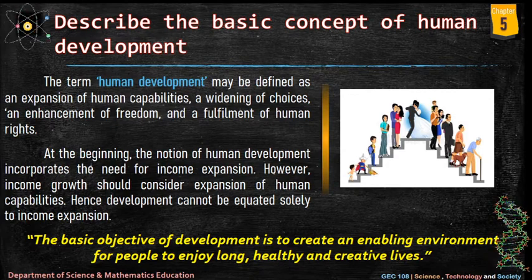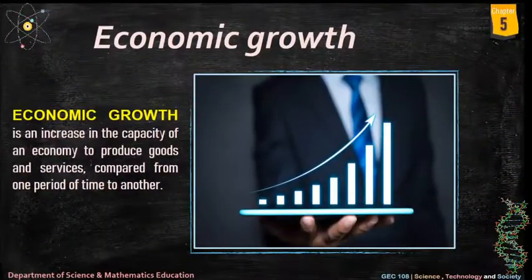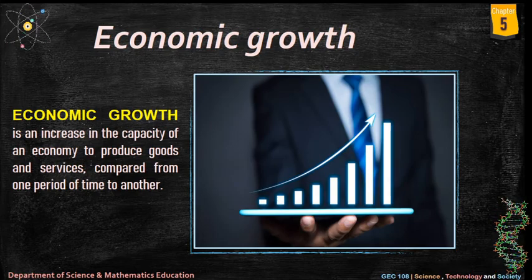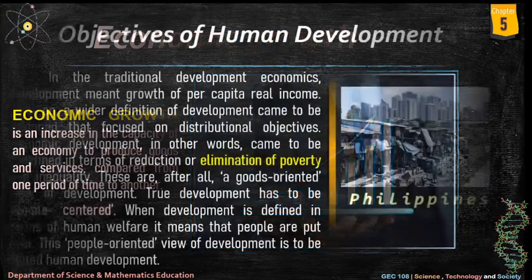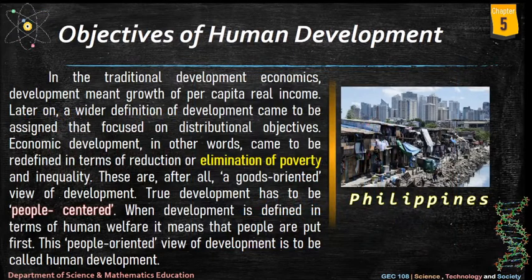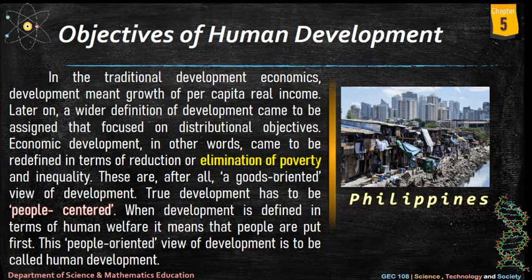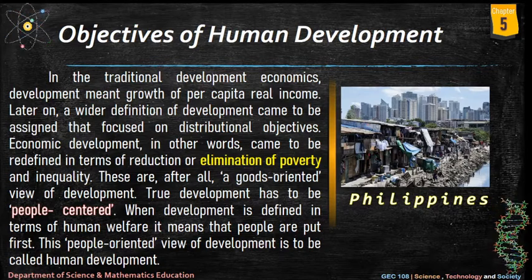The basic objective of development is to create an enabling environment for people to enjoy long, healthy, and creative lives. Economic growth is an increase in the capacity of an economy to produce goods and services compared from one period of time to another. In traditional development economics, development meant growth of per capita real income. Later, a wider definition came to focus on distributional objectives — economic development came to be redefined in terms of reduction or elimination of poverty and inequality.